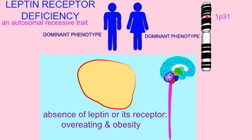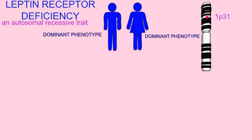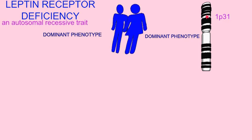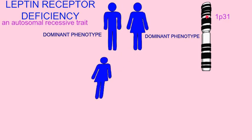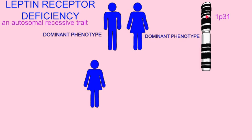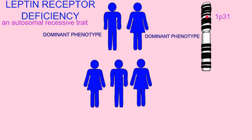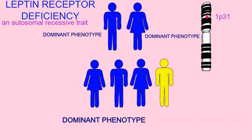Just as a hormone needs to be made, so too does a receptor for that hormone. Otherwise, the brain cannot detect the presence of the hormone in the blood. The hypothalamus, choroid plexus, and other regions express leptin receptors.